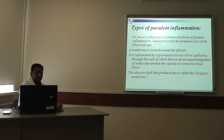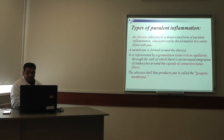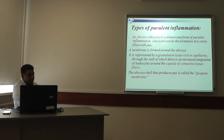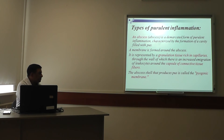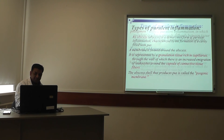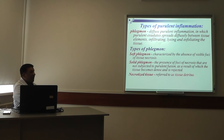Types of purulent inflammation — first is abscess: it is demarcated purulent inflammation characterized by the formation of a cavity filled with pus. A membrane is formed around the abscess, represented by granulation tissue rich in capillaries, through the walls of which there is increased immigration of leukocytes. Around the capsule there are connective tissue fibers. This structure that produces the abscess is called the pyogenic membrane.